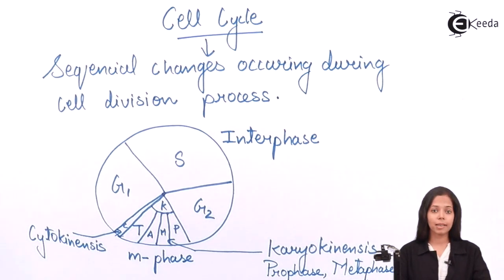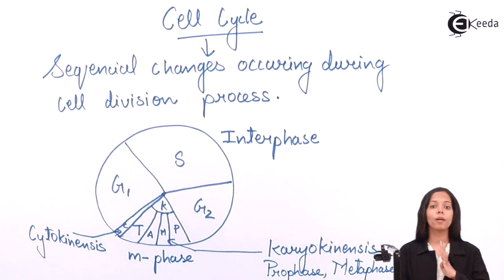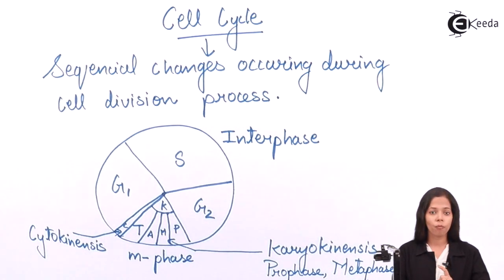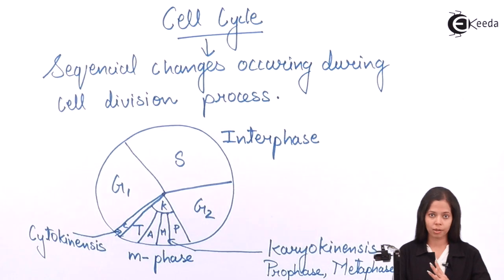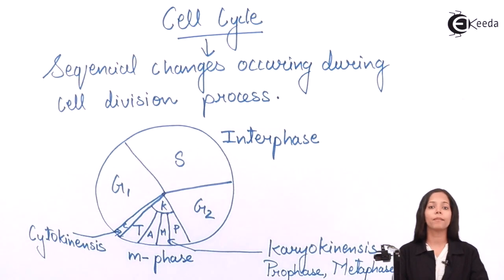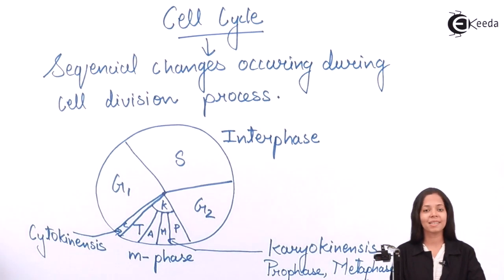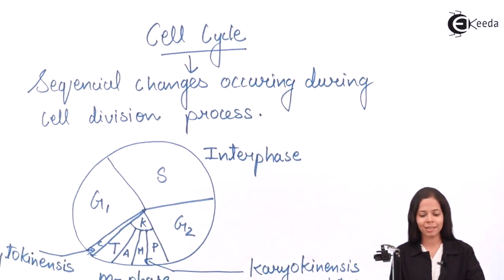Karyokinesis is further divided into four major phases: prophase, metaphase, anaphase, and telophase. Here we have completed the cell cycle. Thank you very much, students.